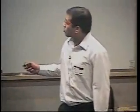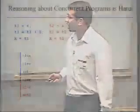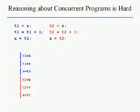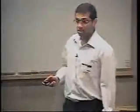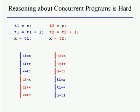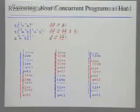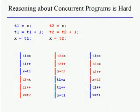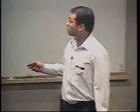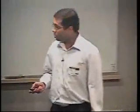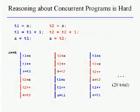The moment we add another thread to this program, the execution can be extended in many ways: the blue thread runs to completion before the red thread, or vice versa, or the blue thread is preempted after the first statement, the red thread runs to completion, and then the blue thread resumes. There are 20 such executions in total. By just adding one more thread, we've increased the number of executions from 1 to 20.